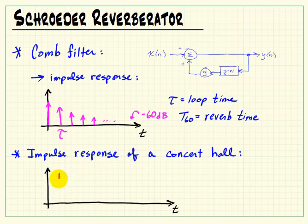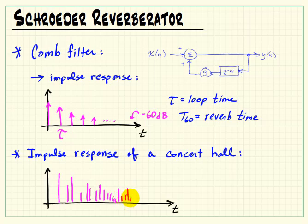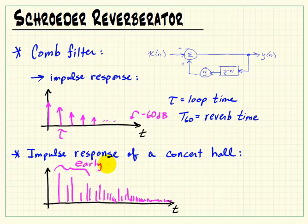Now if we compare the comb filter impulse response to that of a typical concert hall, we find that we have some strong impulses at the beginning, or the onset of the response, and then the pulse density builds up while the amplitude decreases. This has to do with the fact that we have some direct path signals at the beginning, or maybe taking one bounce. These are referred to as the early echoes.